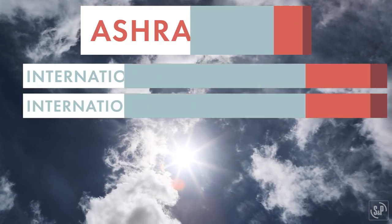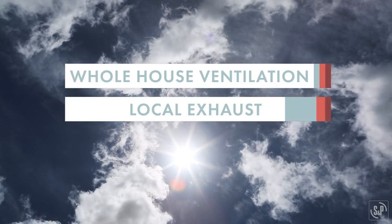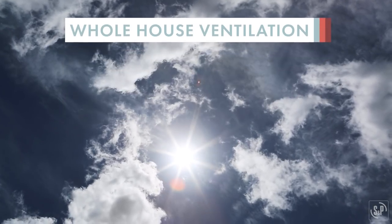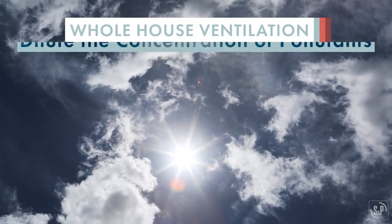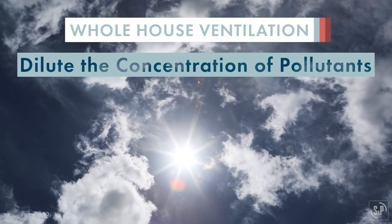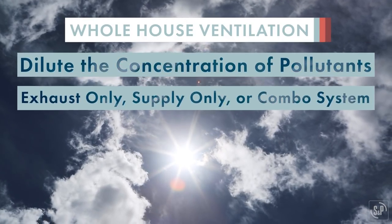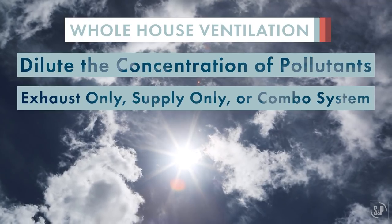There are two basic requirements: whole house ventilation and local exhaust. The first basic requirement, whole house ventilation, is intended to dilute the concentration of pollutants through either an exhaust only, supply only, or combo system.